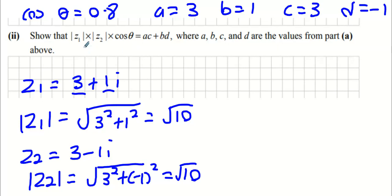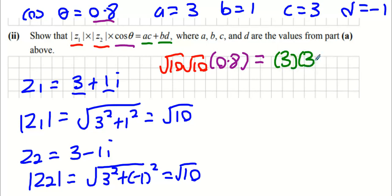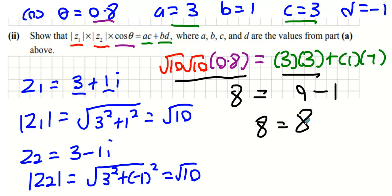Then from here on in it's a show me question. So |z₁| multiplied by |z₂| is √10 multiplied by √10. The cos θ part is the angle we got in the last question. And then after that do ac multiplied by bd. So ac is 3 times 3, and b times d is 1 times -1. Put all this into the calculator, you'll get 8 for this, and this will be 9 take away 1, and then finally you get 8 equals 8. And lo and behold, that's your answer.